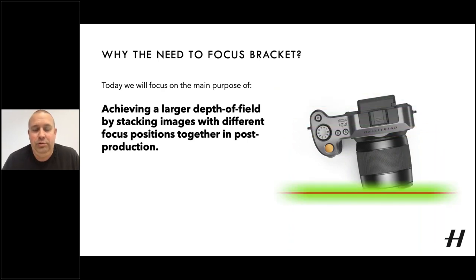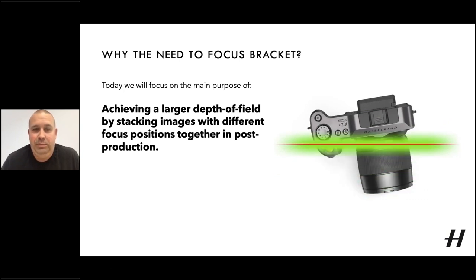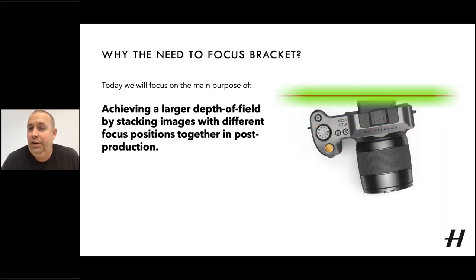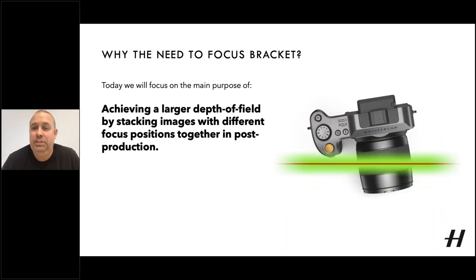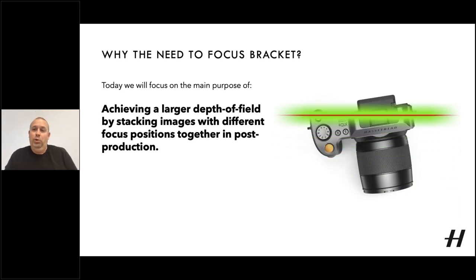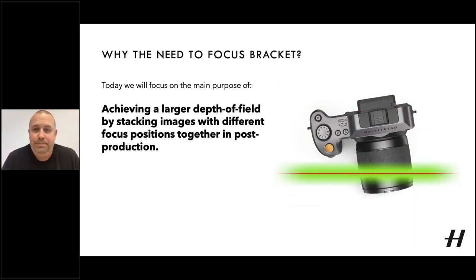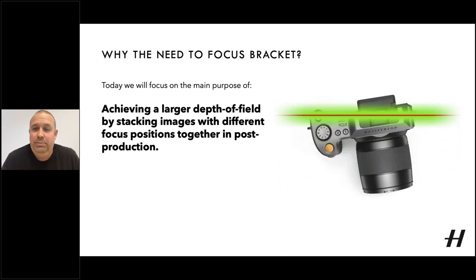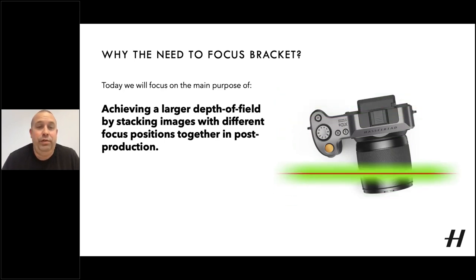From the animation, you can see how the focus steps through the subject taking a series of images. The new focus bracketing option available on the X1D, X1D2 and 907X cameras allows photographers to automatically capture a series of images at stepped focal distances. In focus bracketing mode, the camera will automatically take a preset number of images and calculate focus shift between each capture. The resulting images can then be loaded into focus stacking software, which will analyze the areas of focus in each image and automatically create a composite image where the subject is in complete focus front to back.